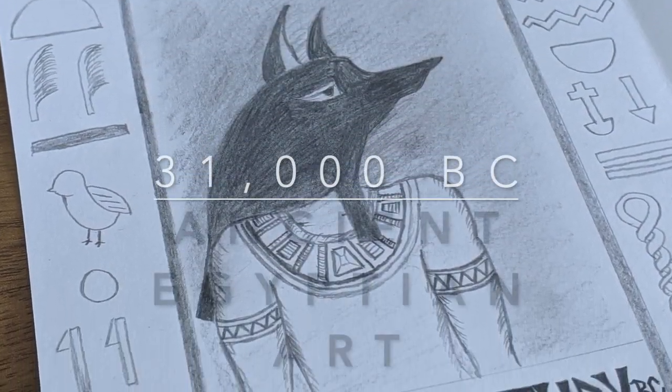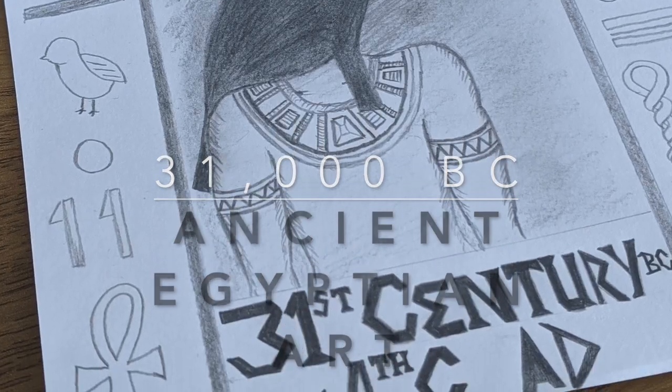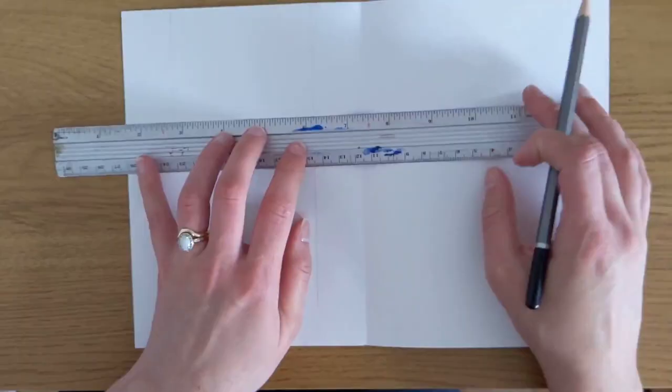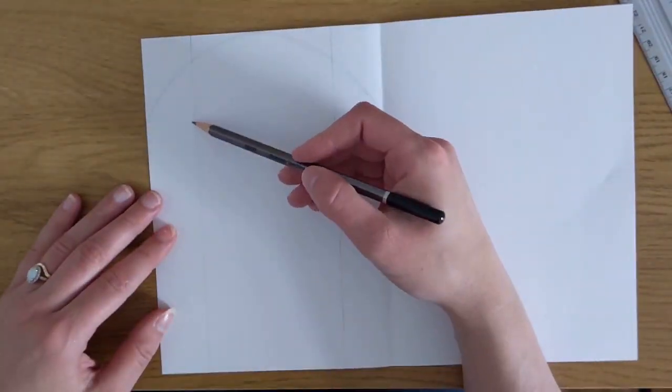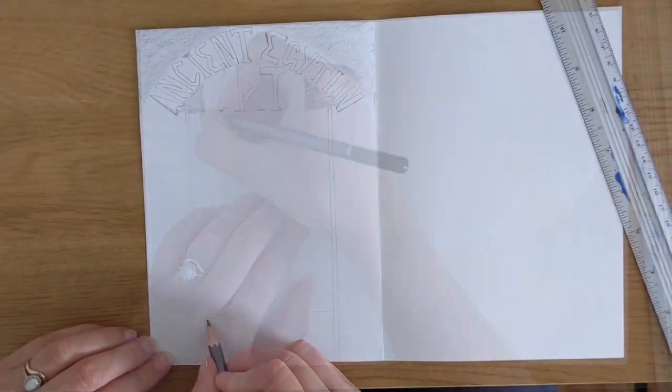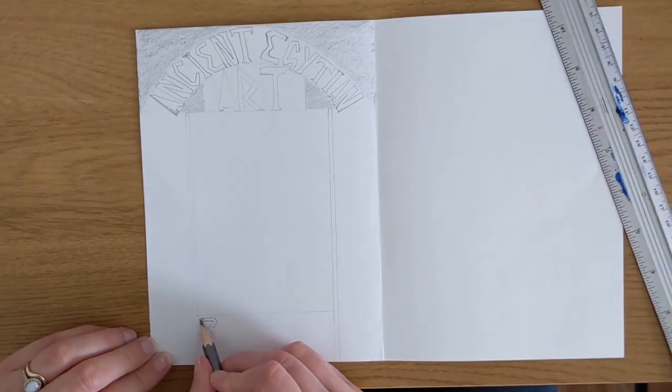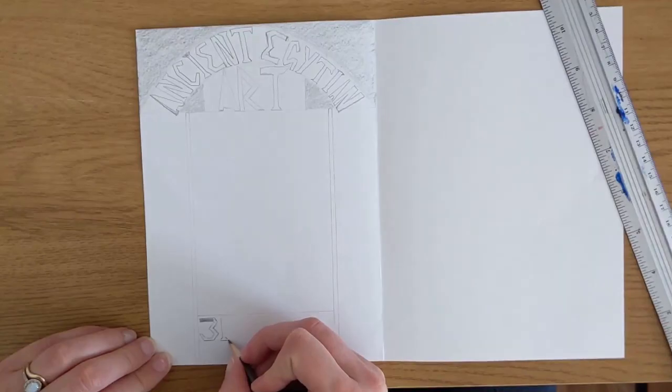Let's look at some examples of how you might do this. Firstly you start out by sketching out your page, think of each page like a poster. Add the title Ancient Egyptian Art and the date when this art movement occurred.